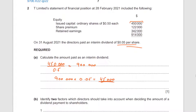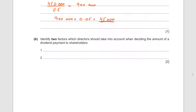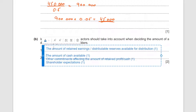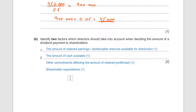Now find two factors which directors should take into account when deciding the amount of a dividend payment to shareholders. Logically, they should have enough cash and sufficient liquidity to pay dividends. Secondly, they should have revenue reserves available — specifically, retained earnings should be adequate. I'll paste the mark scheme answer so you can compare and get inspiration from it.